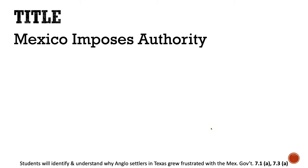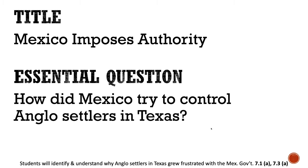Your title for this set of notes is 'Mexico Imposes Authority.' And your essential question today is: How did Mexico try to control Anglo settlers in Texas?